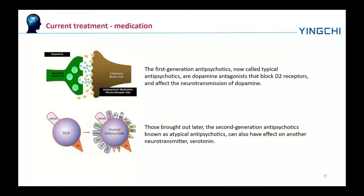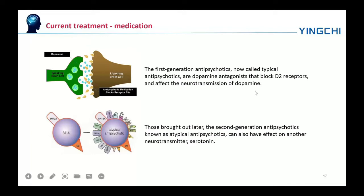The primary treatment of schizophrenia is the use of antipsychotic medications, often in combination with psychosocial interventions and social supports. The first-generation antipsychotics, now called typical antipsychotics, are dopamine antagonists that block D2 receptors and affect the neurotransmission of dopamine. The second-generation antipsychotics, known as atypical antipsychotics, can also have an effect on another neurotransmitter, serotonin. Antipsychotics can reduce the symptoms of anxiety within hours of their use, but for other symptoms may take several days or weeks to reach their full effect.